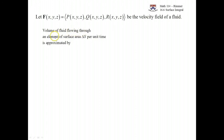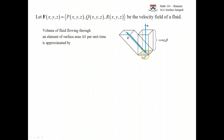We have this vector field F with multivariable functions of x, y, and z in each component. The way to think about it is as a velocity field of a fluid — maybe two-dimensional, maybe three-dimensional. We want to calculate the volume of fluid that flows through an element of the surface area, delta S, per unit time. I have this element of surface area delta S, my normal vector from this orientable surface, and my vector field F.